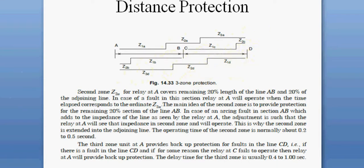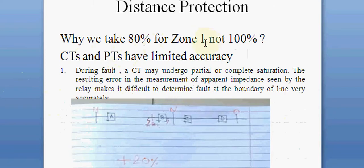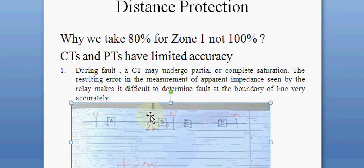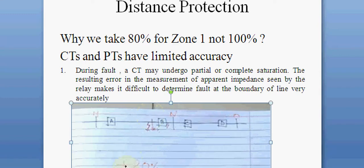Why do we take only 80% of the line length for Zone 1? During a fault, a CT may undergo partial or complete saturation. The resulting error in the measurement of the apparent impedance seen by the relay makes it difficult to determine faults at the boundaries of the line very accurately. The inputs to the relay are provided by CTs and PTs, and considering saturation errors, the maximum error can be up to ±20%.